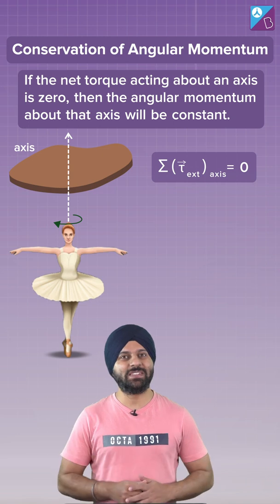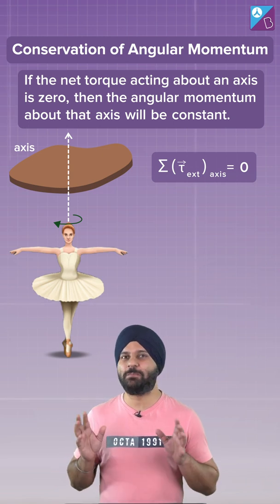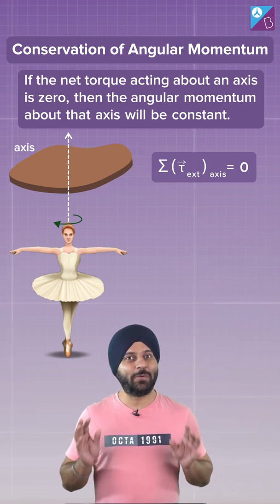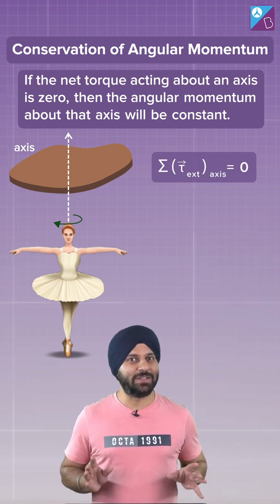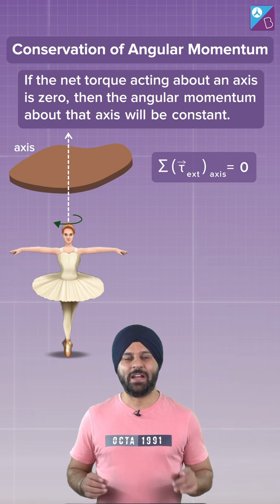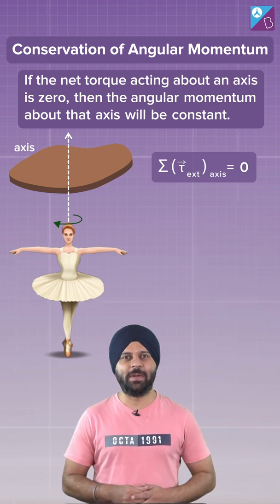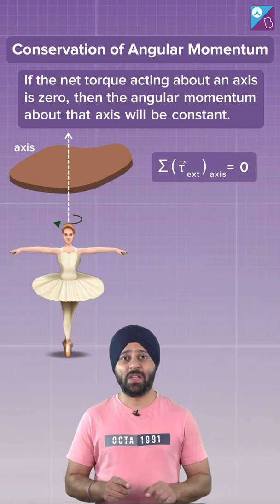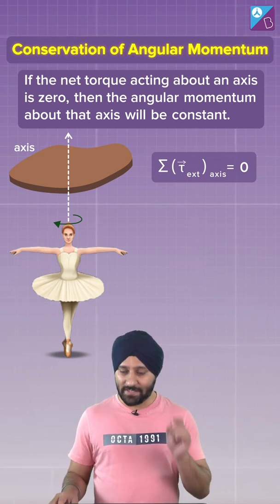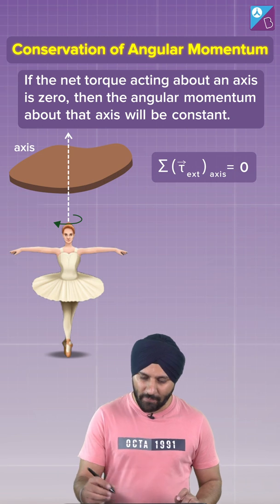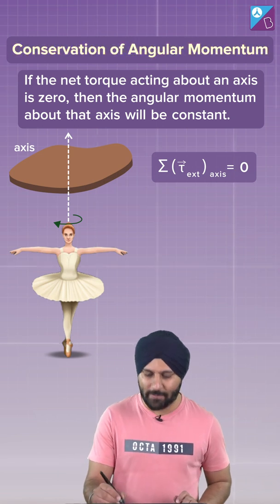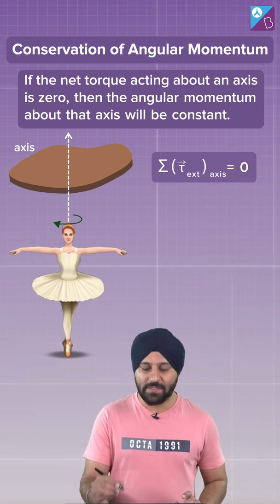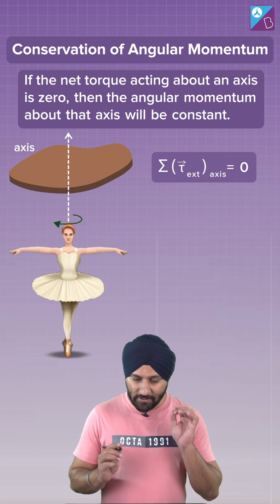If you are amazed by how a ballet dancer increases or decreases her speed during her performance, then your answer is here. The answer is conservation of angular momentum. So let's try to understand what conservation of angular momentum is.